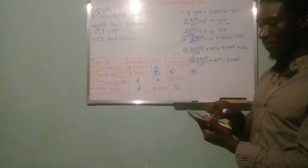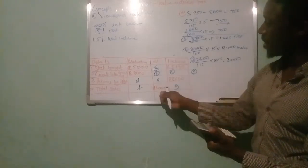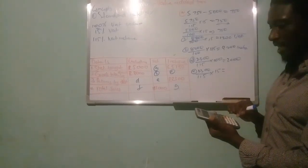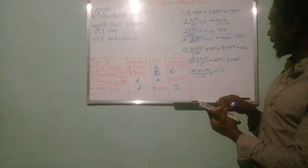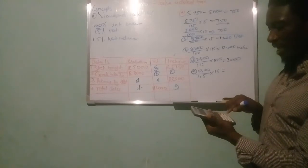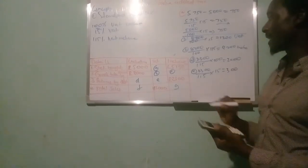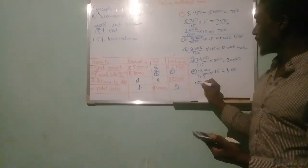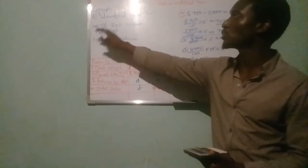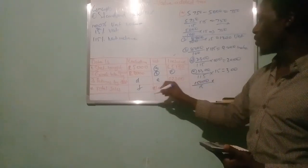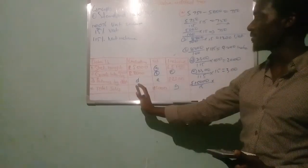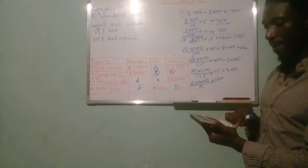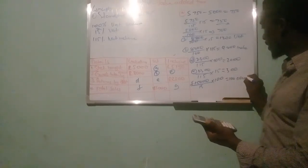For example F, you are given the VAT amount of 15,000, which equals 15%. You divide by 15 and multiply by 100 because F is the VAT exclusive amount, and exclusive is over 100%. So 15,000 divided by 15, multiplied by 100, gives you 100,000. Your answer for F is 100,000.